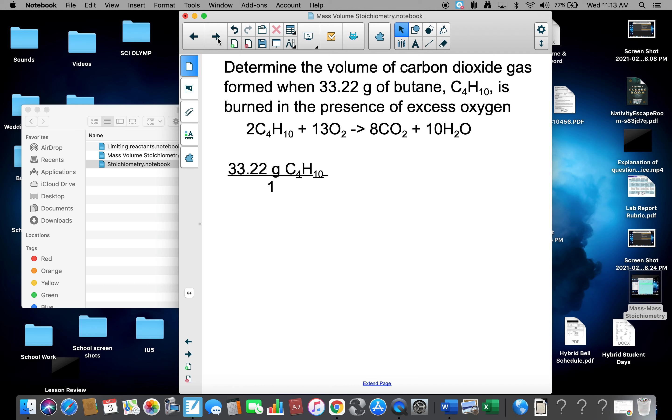Put our given information over one, convert it to moles. So atomic mass: I have carbon, 48 grams, 4 times 12, 48 grams. Hydrogen, 10 times 1, 10 grams. Add them together, I get 58 grams is 1 mole. 1 mole of C4H10 is 58 grams.